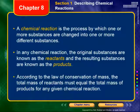A chemical reaction is the process by which one or more substances are changed into one or more different substances. In any chemical reaction, the original substances are known as reactants, and the resulting substances are known as products. According to the law of conservation of mass, the total mass of the reactants must equal the total mass of the products for any given chemical reaction.